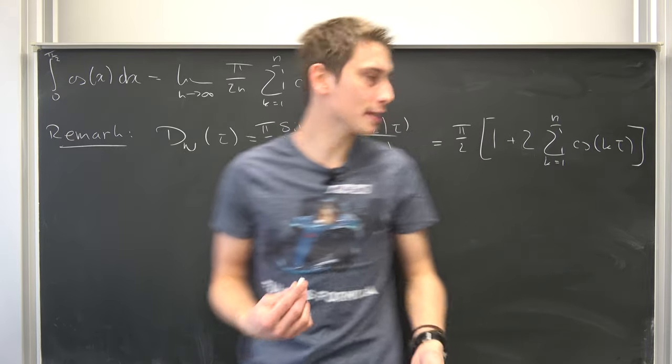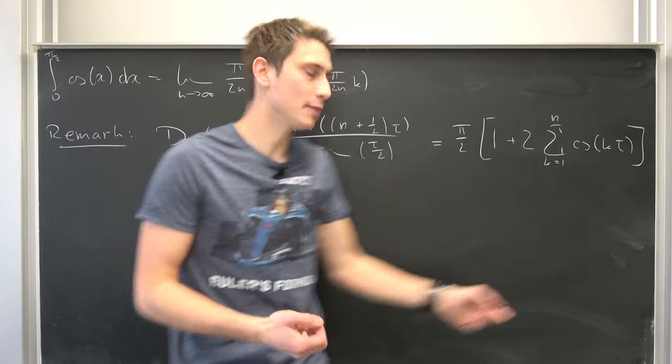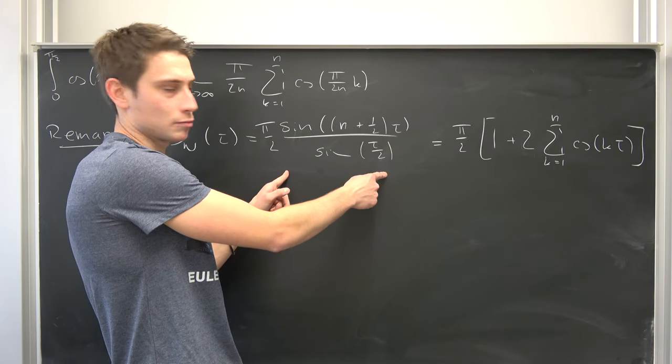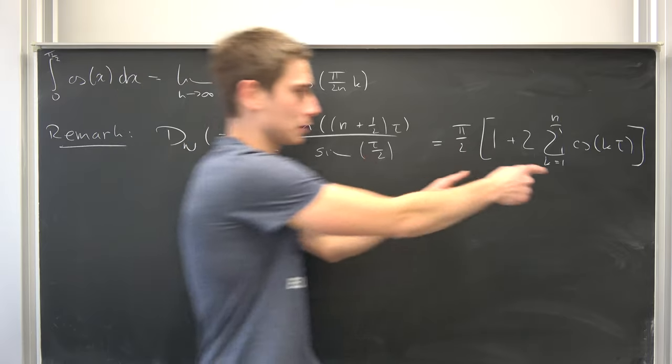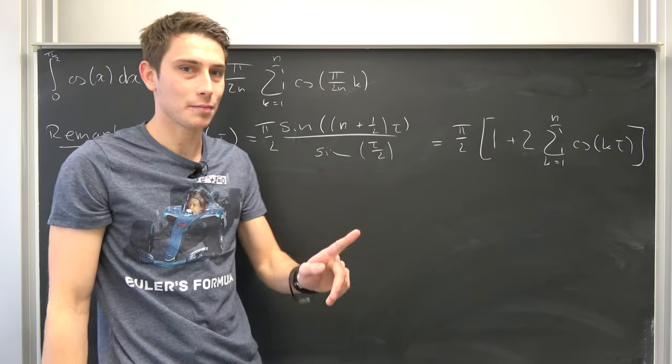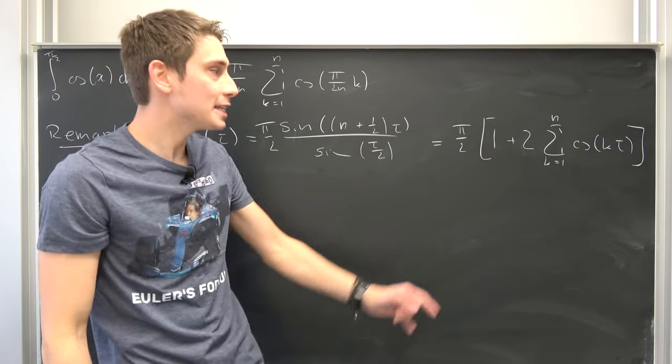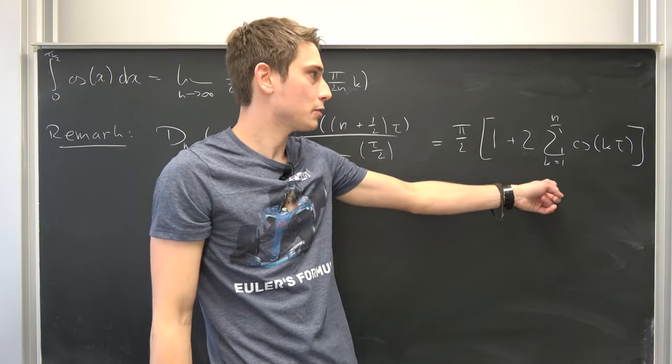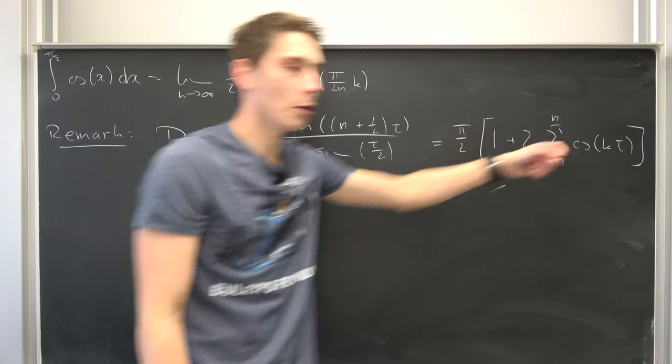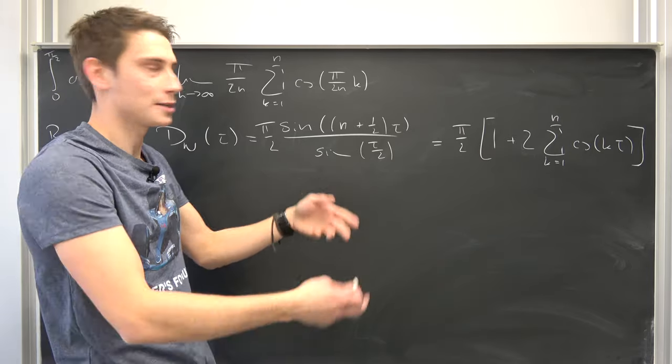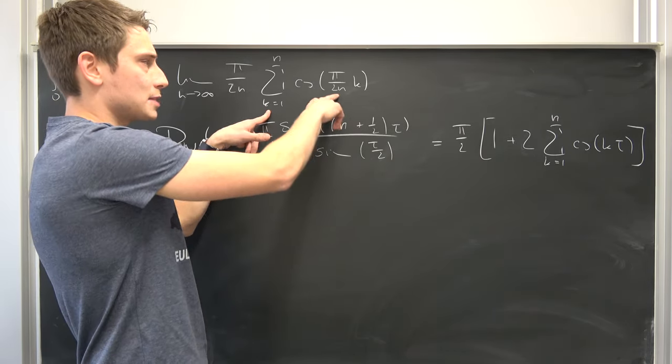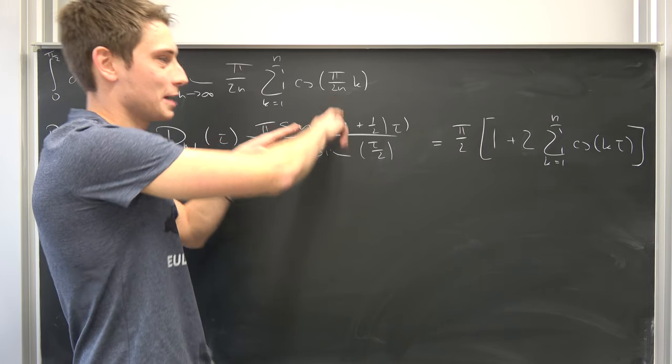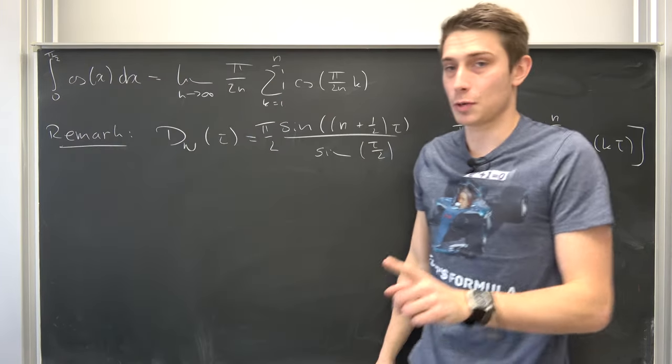But what I also did, I derived this identity right here, namely that this sine rational function is equal to this thing right here. We can make actual use of that because we have a sum running from k equals 1 to n of cosine of k times tau, pi over 2 times n. This is really good.